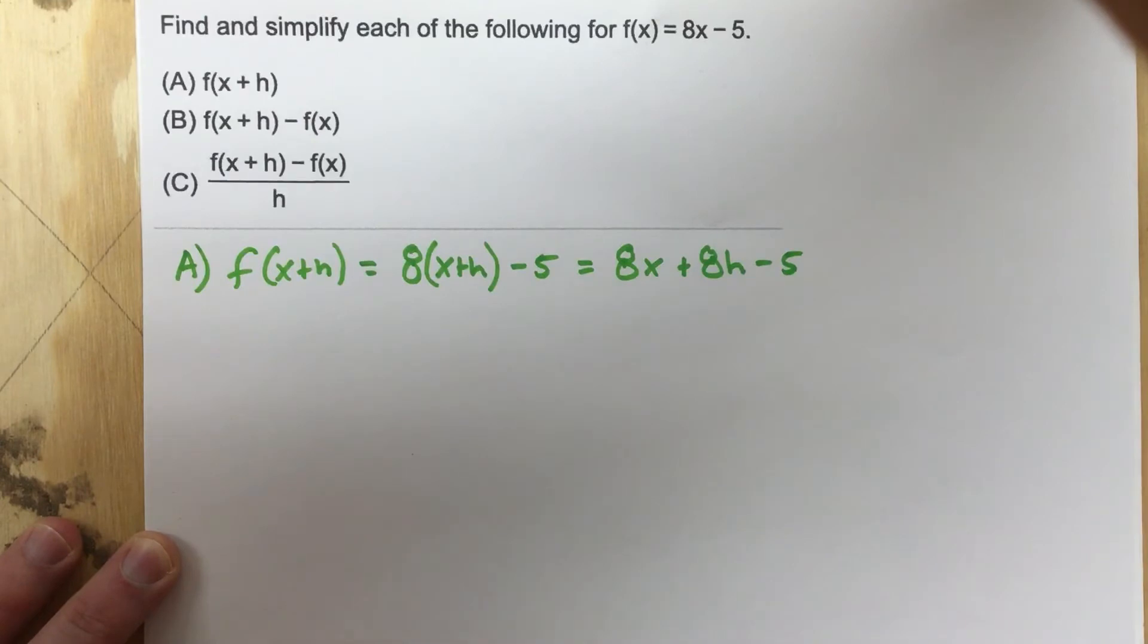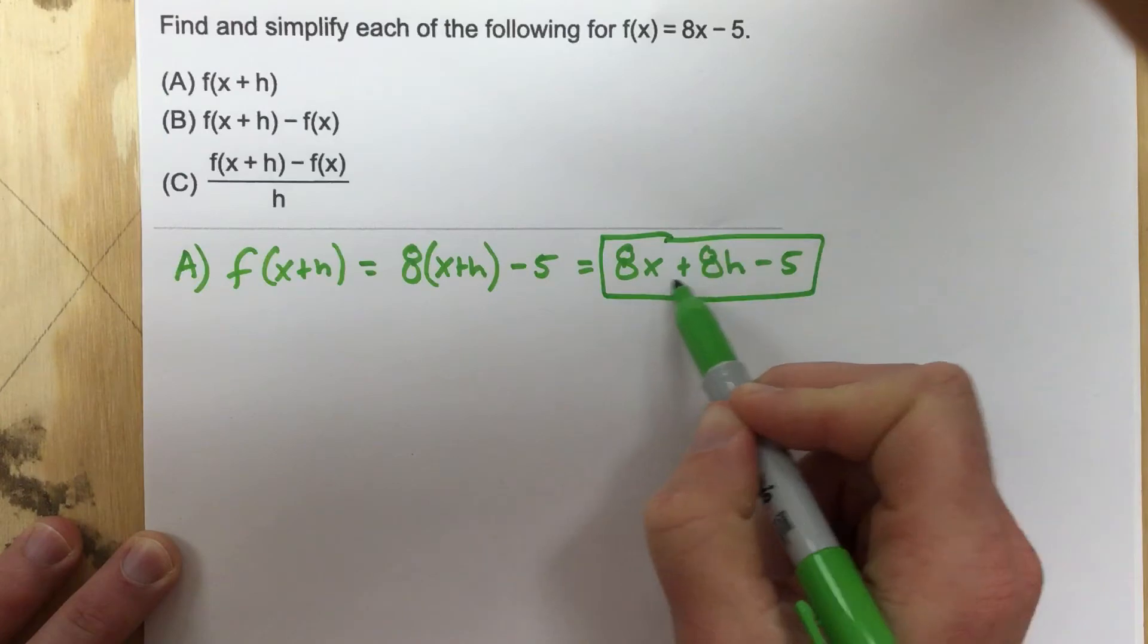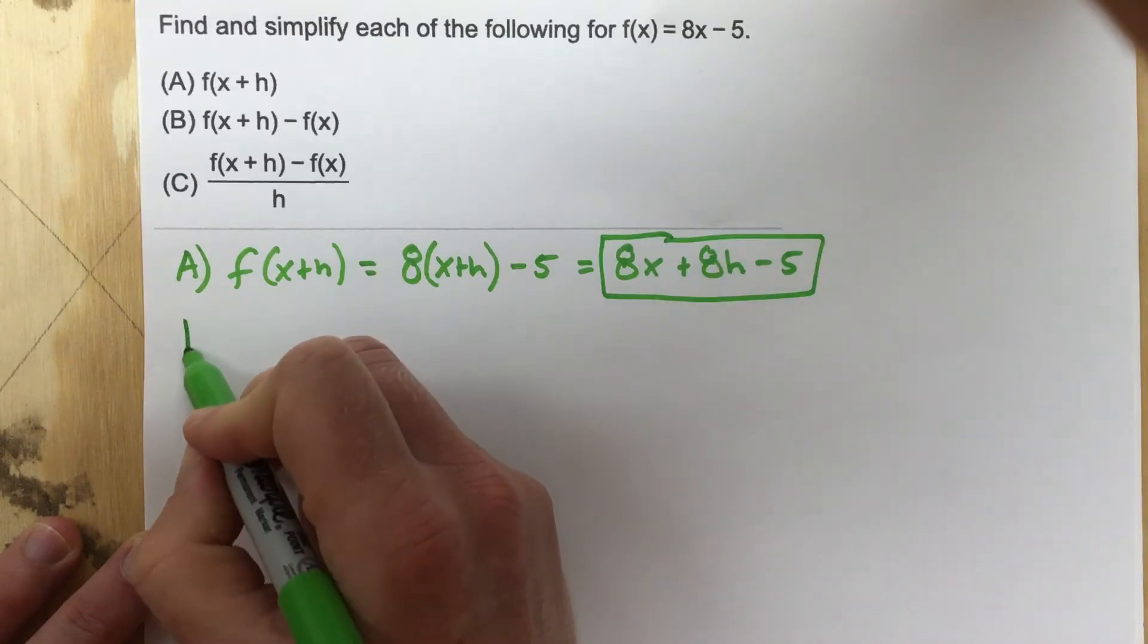And that's as simple as you can make that. So to simplify it, that's it right there. Can't combine the 8x and the 8h, nothing to cancel. Part B now,